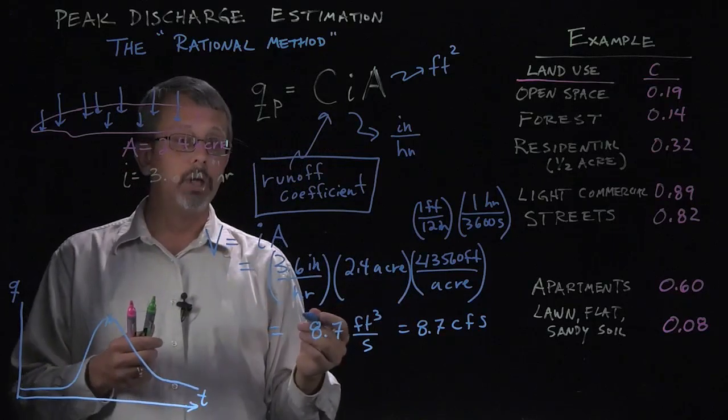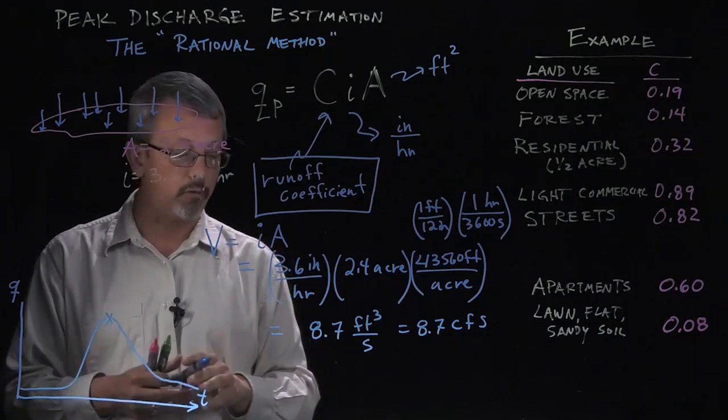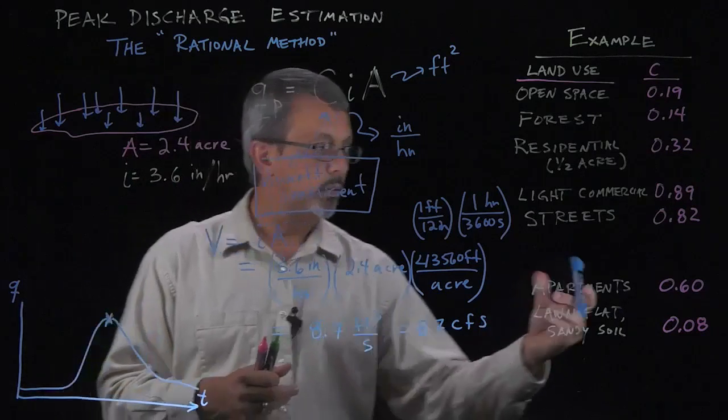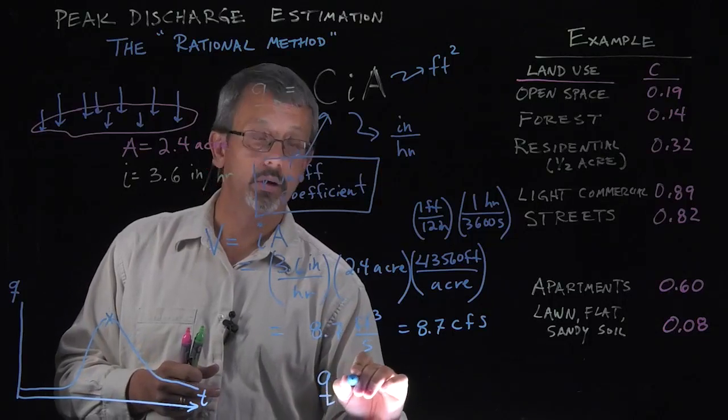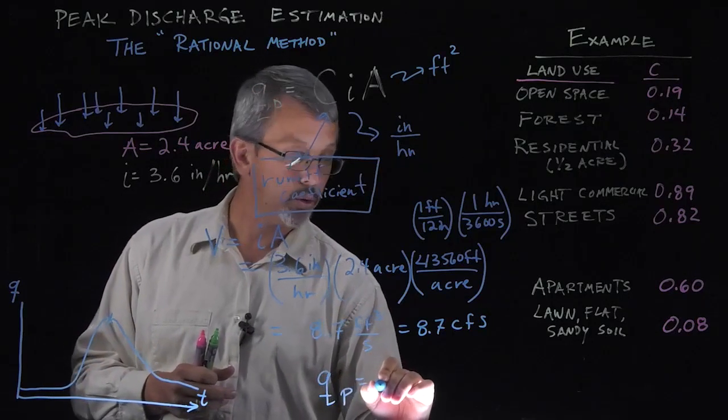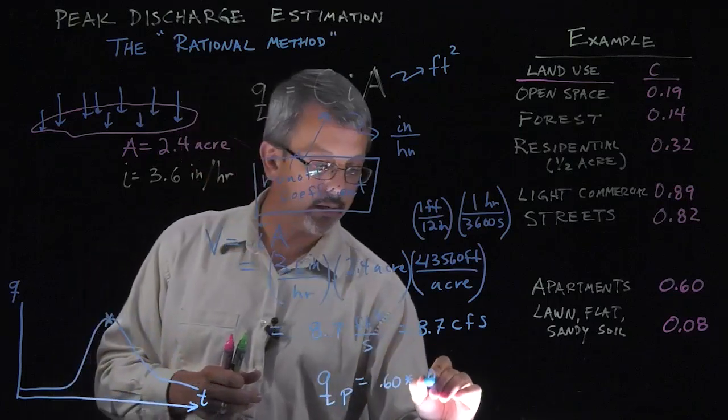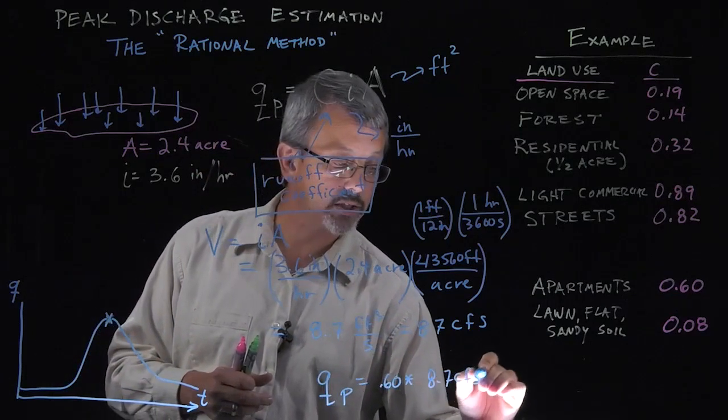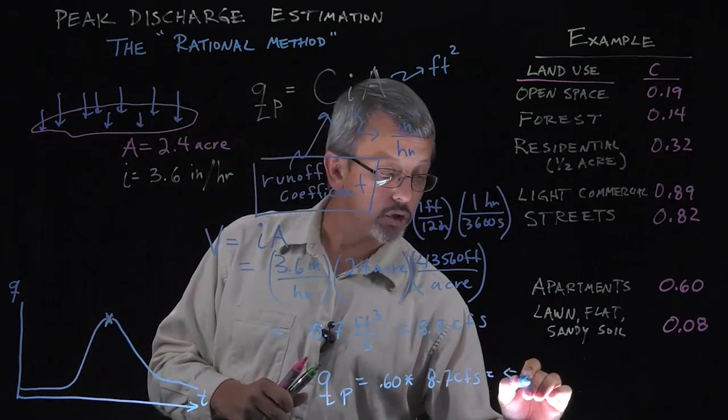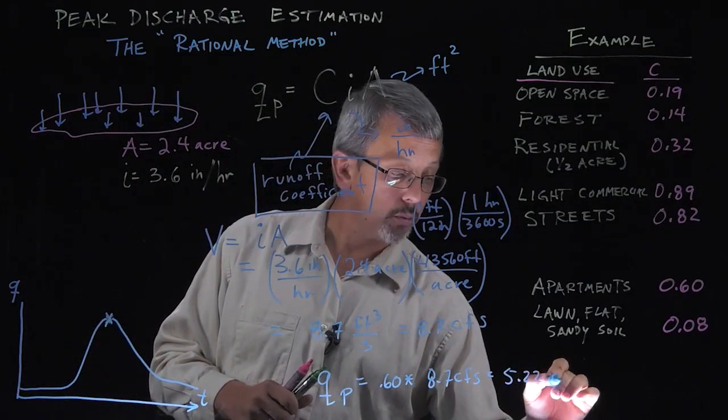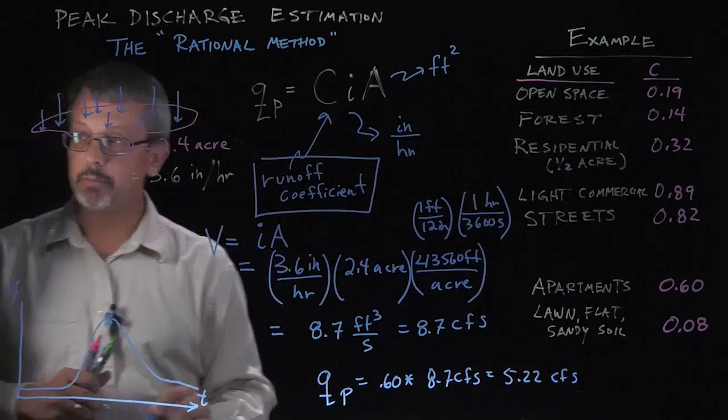Let's say, for example, we have apartments on this 2.4 acre area and we want to know what the peak overflow is going to be. Well, we would simply say that our Q would be equal to 0.60 times that I*A, which is the 8.7 CFS. And that would give us a value of 5.22 cubic feet per second as an estimate of this peak flow here.